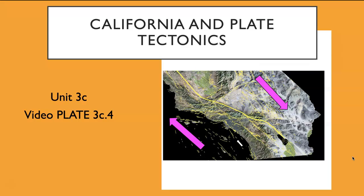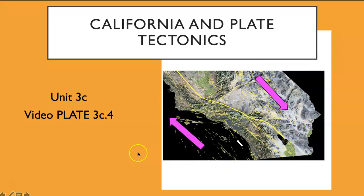Here I have an image of Southern California. The yellow lines are faults, and this thicker line is the San Andreas Fault that goes down to the Salton Sea and eventually into the Gulf of California to join the Gulf of California Spreading Center System. All the other yellow lines are smaller faults within the plate boundary accommodating motion between the plates. The motion between the two plates is shown with the purple arrows — North America is moving to the southeast relative to the Pacific plate, which is moving to the northwest.